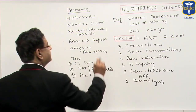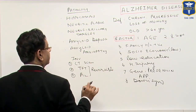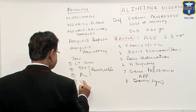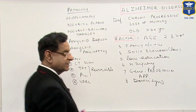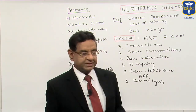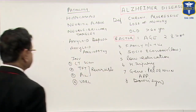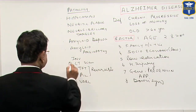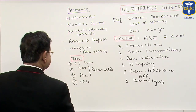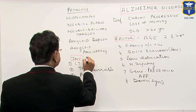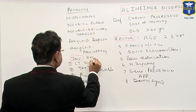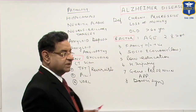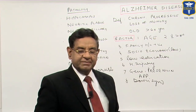In Alzheimer's disease, the dementia is irreversible. We also do VDRL test to rule out tertiary syphilis. Remember, it is a diagnosis of exclusion — you exclude other causes of dementia.